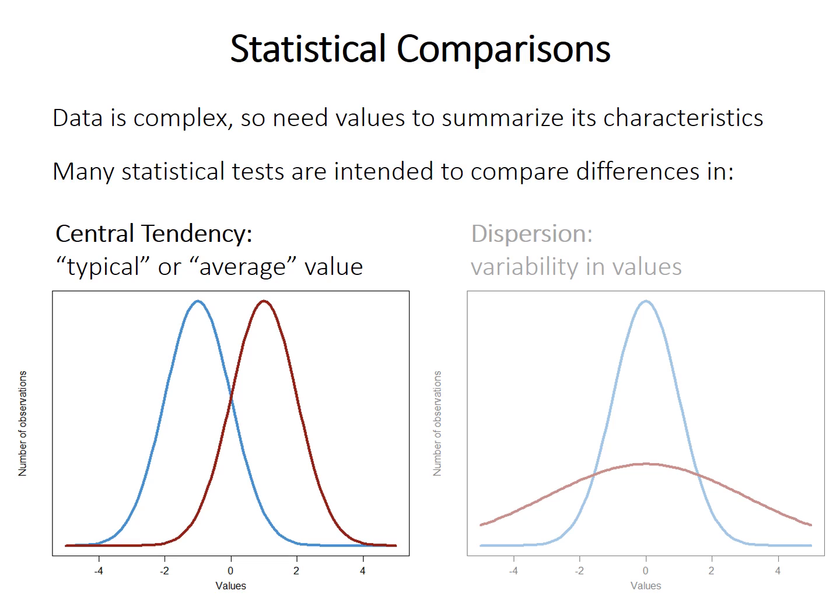The two most important ways of summarizing data are the central tendency, which is the typical or average value of data in a data set and the focus of this video, and the other is the dispersion, which is the variability in values in a data set and the focus of the next video in this series.